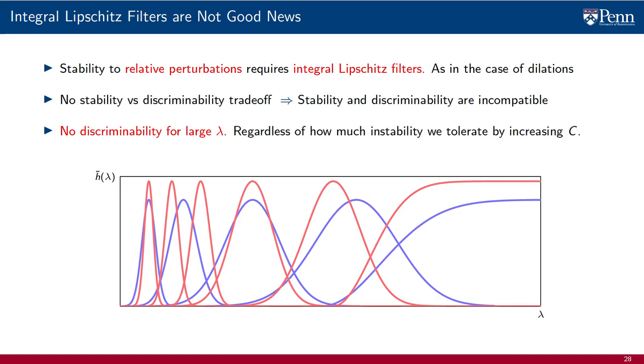This fundamental limitation is what graph neural networks overcome with the use of pointwise nonlinearities.